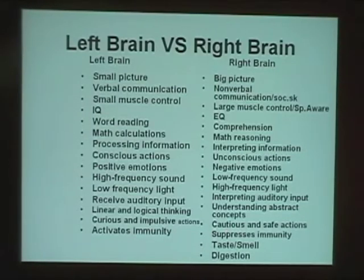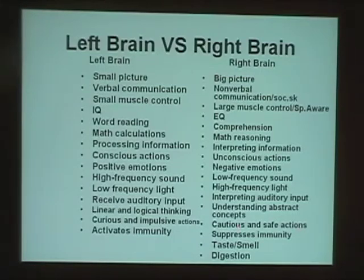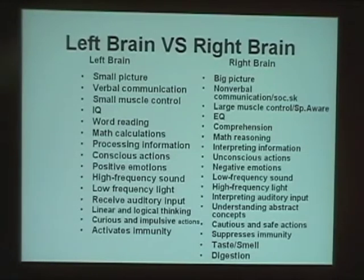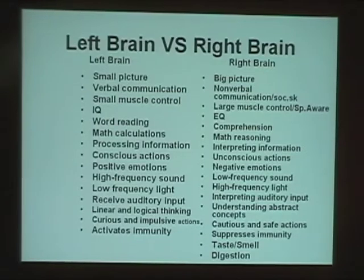The right brain contains cautious and safe actions — it's your brake pedal; the left brain is your gas pedal. If the right brain is weak, you won't have that subconscious telling you 'I shouldn't do that.' You're only on full gas — very impulsive, acting out in class without thinking, calling out before your turn. Patients with a right brain weakness do not have the cautious, safe action part of their brain working — more gas pedal than brake pedal.